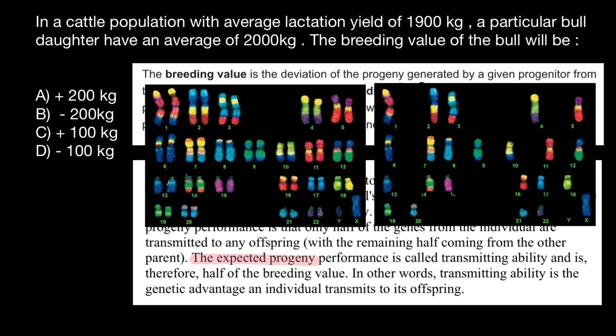Pay attention to this phrase: the expected progeny performance is called transmitting ability and is therefore half of the breeding value. So the difference of 100 kg — between 1,900 kg and 2,000 kg — represents the transmitting ability of this bull. In order to get the breeding value of this bull, we multiply by 2. The correct answer is answer A: the breeding value of the bull is plus 200 kg.